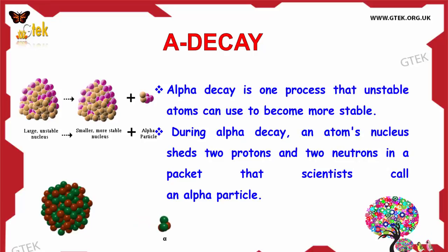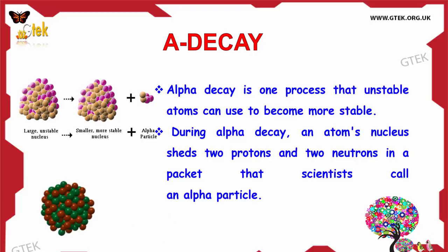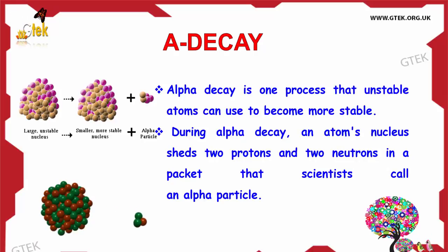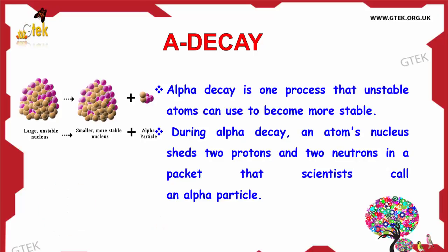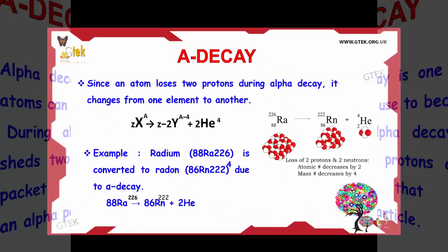Here the atom's nucleus sheds two protons and two neutrons in a packet, by which the Alpha particle gets generated.